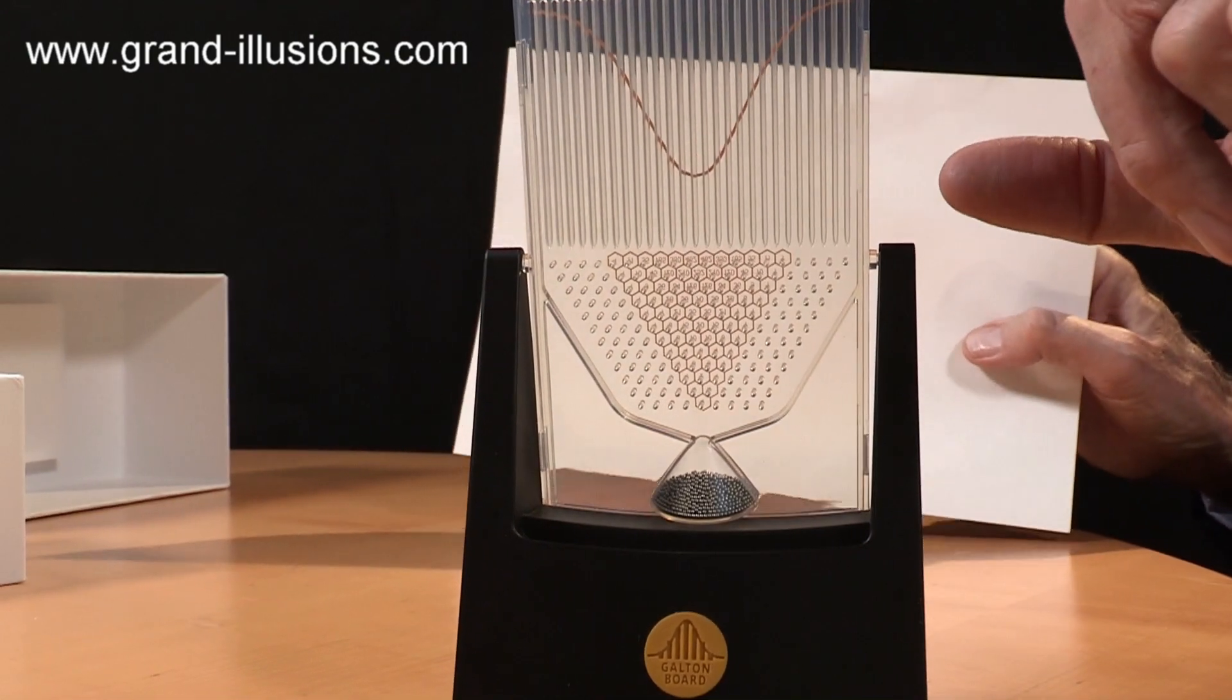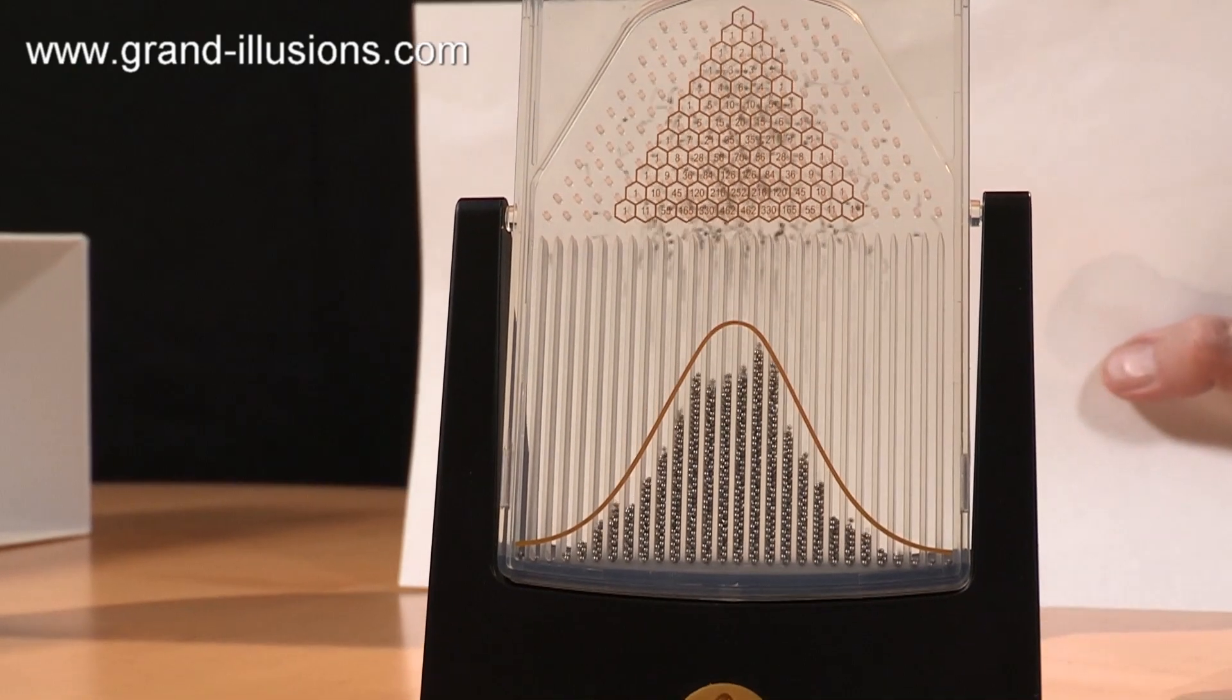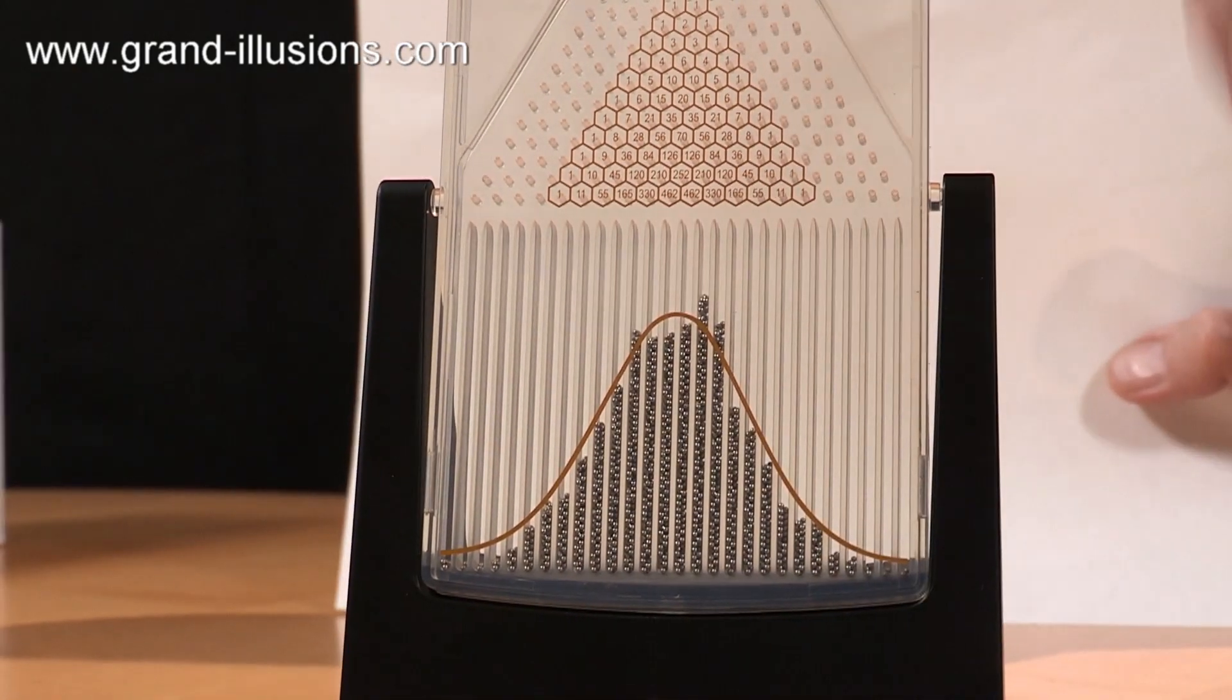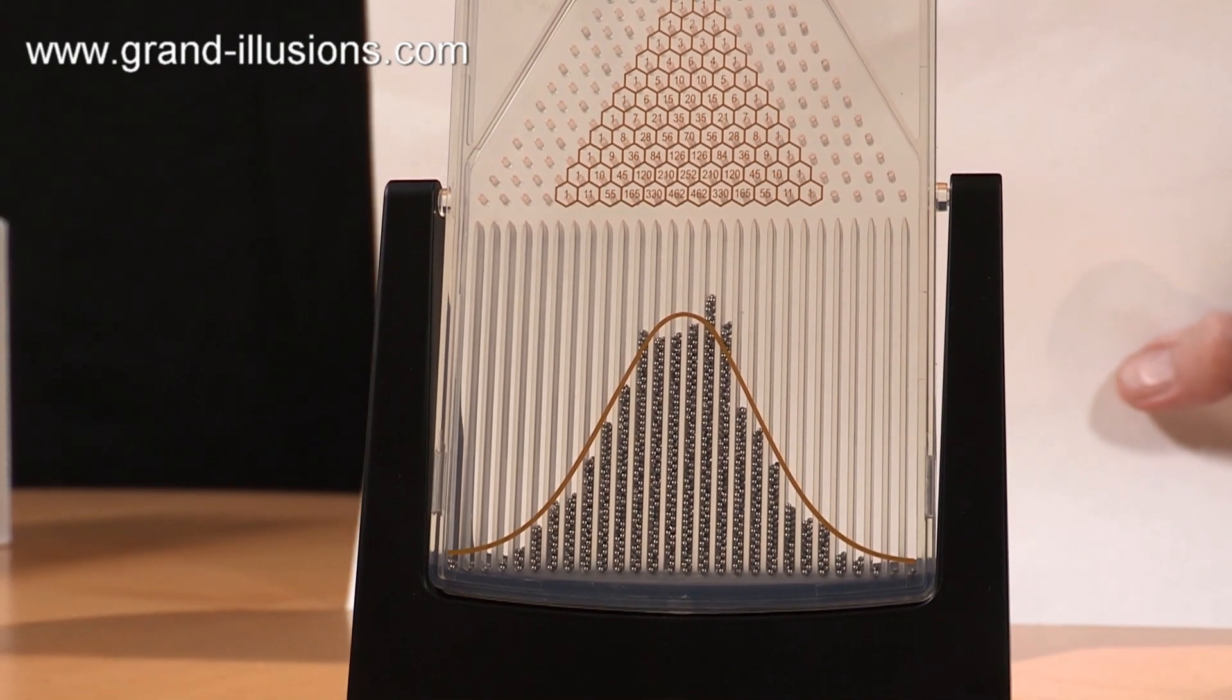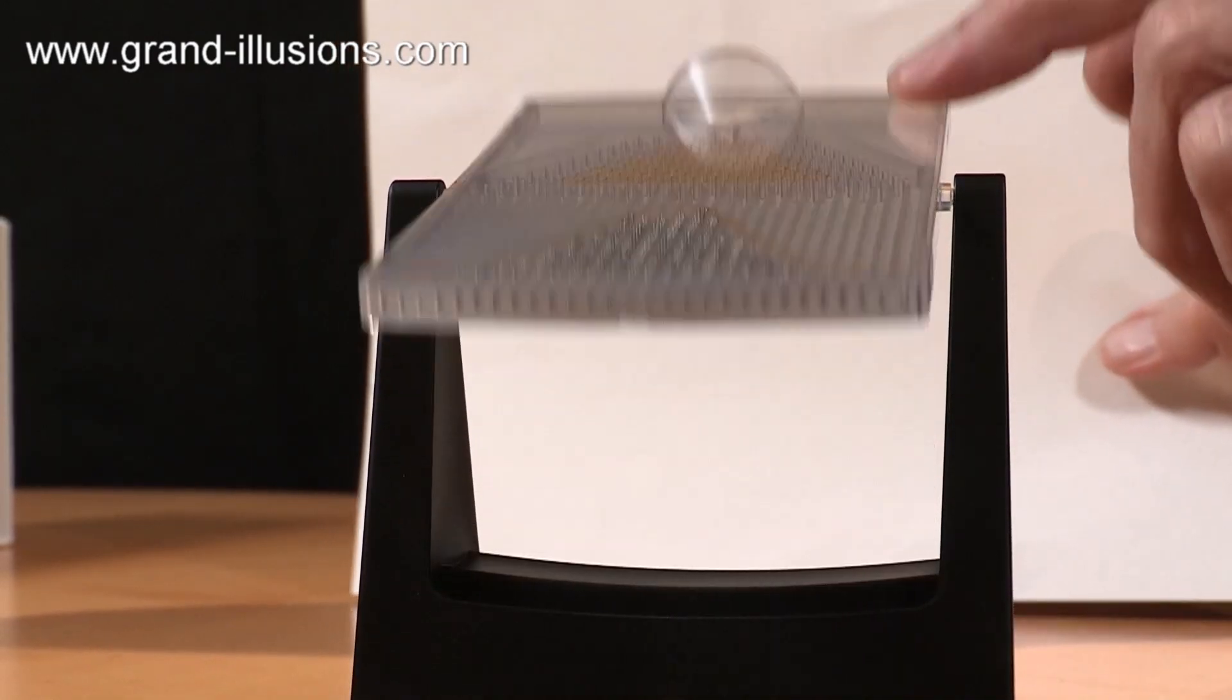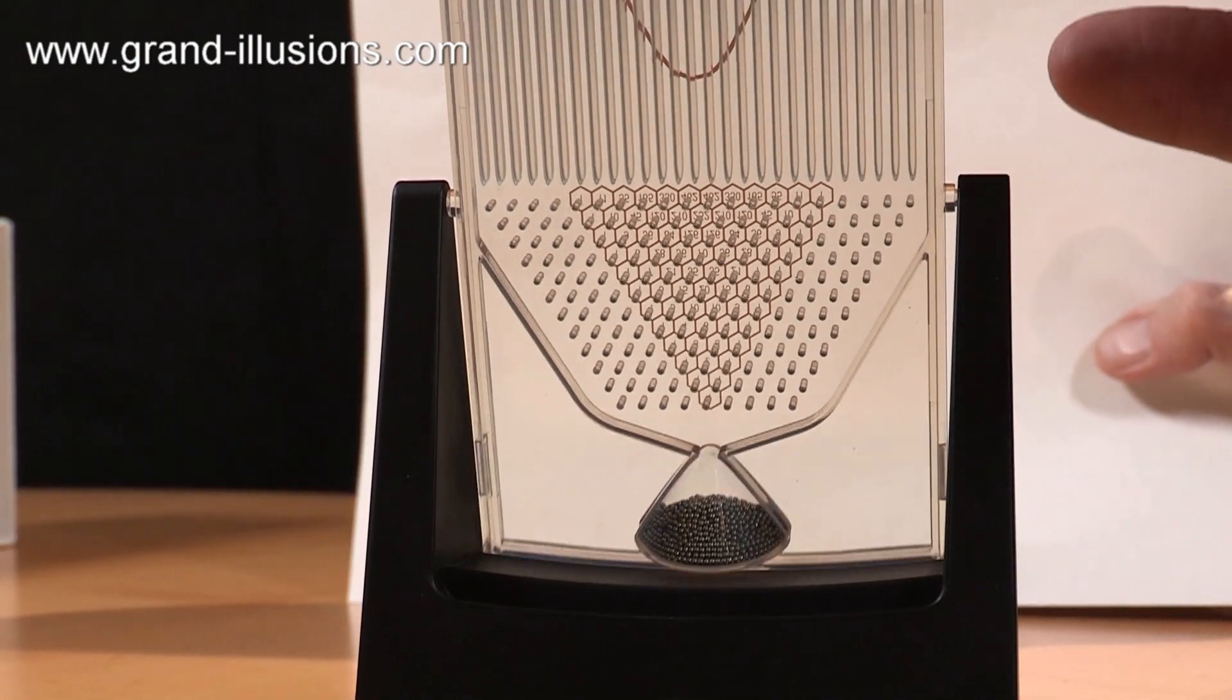So what we do is we turn it upside down several times and each time we do it the balls fall down through a whole series of pegs and the majority fall down in the middle where they started, but a few, just due to the laws of chaos and chance, come further out and just one or two come all the way out to the very edge. So it's a lovely way of showing distribution, normal curve distribution.